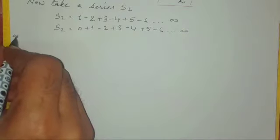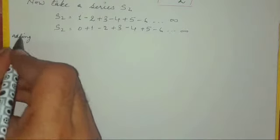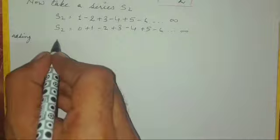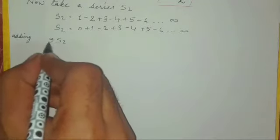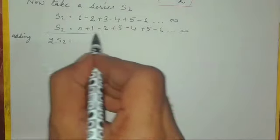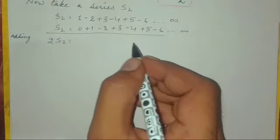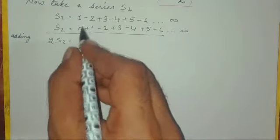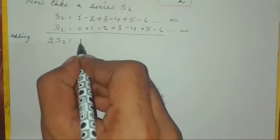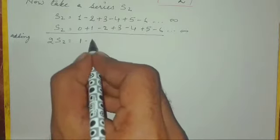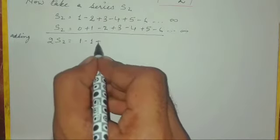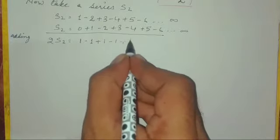If we add both these equations, S2 and S2, we get two times S2 will be equal to: 1 plus 0 will give 1, now this plus 1 minus 2 will give minus 1, then plus 3 minus 2 will give plus 1, and minus 4 plus 3 will give minus 1. And in this equation we again get 1 minus 1 plus 1 minus 1 till infinity.